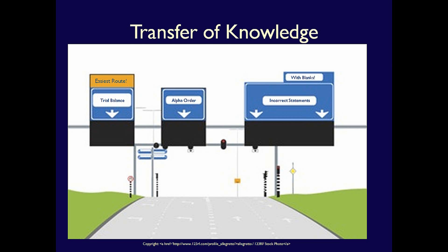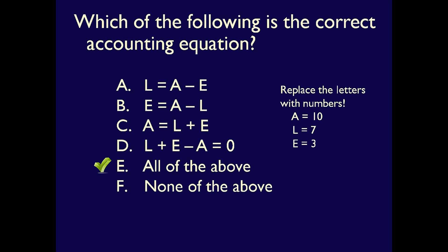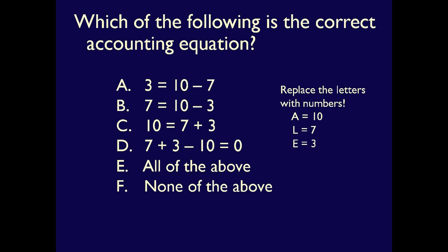Let's do an example to see this. You've already been introduced to the accounting equation. Which of the following is the correct accounting equation? Many of you likely said C — assets equals liabilities plus equity — but the answer is actually E, all of the above. To figure this out, let's replace assets with the number 10, liabilities with 7, and equity with 3. You can quickly see that all of these equations are correct: 3 does equal 10 minus 7, and 7 plus 3 minus 10 is equal to 0. Recognizing that required us to see that the structure of the question didn't matter — the underlying math did.